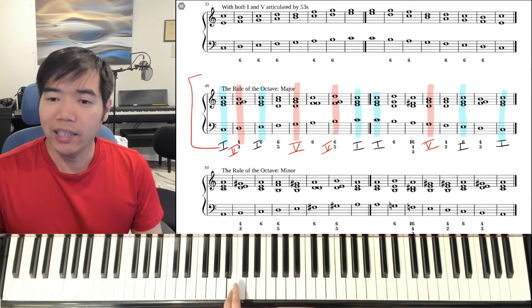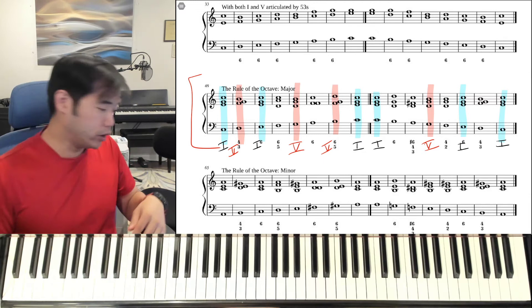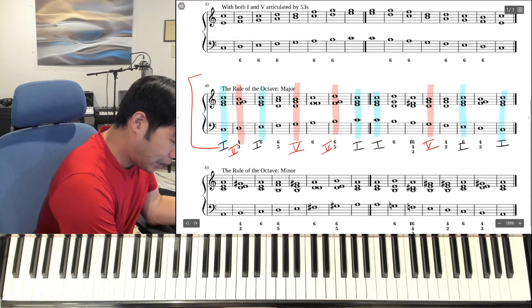So already we have many of the notes of the scale covered. D to E, B to C, and G, and the lower C. Let's take a look at the descending portion. The very... Let's go over here. Just go in order.